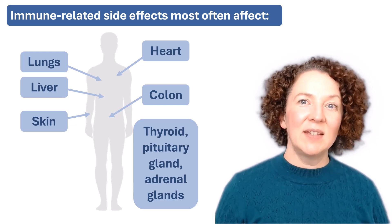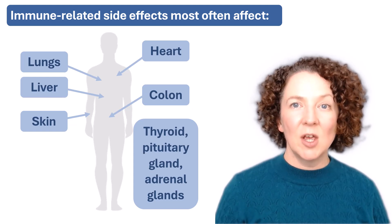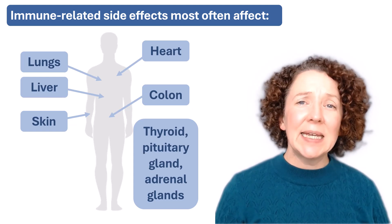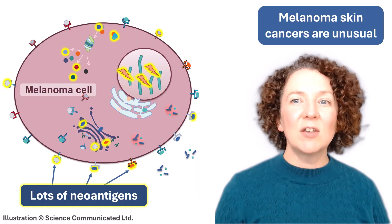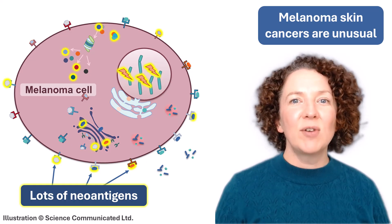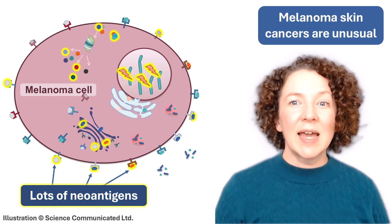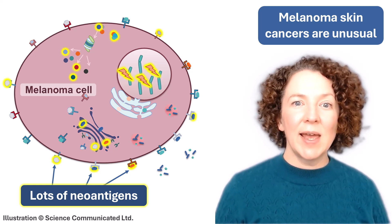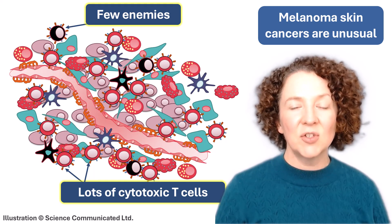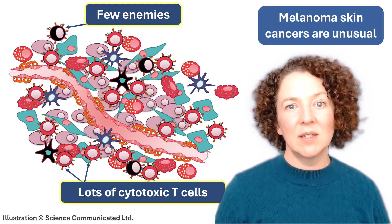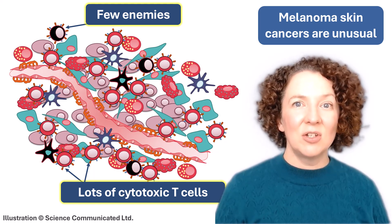Despite all of this, checkpoint inhibitors have become an incredibly important group of treatments. One cancer in which they work particularly well is melanoma skin cancer. Melanoma is often caused by UV light from the sun, which creates thousands of mutations in the cells' DNA. The cancer cells usually display a lot of neoantigens and they tend to be surrounded by cytotoxic T cells rather than by enemies. With a boost from a checkpoint inhibitor, these T cells can destroy the cancer.